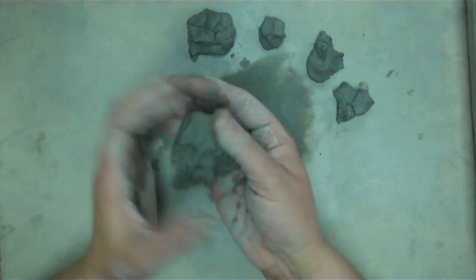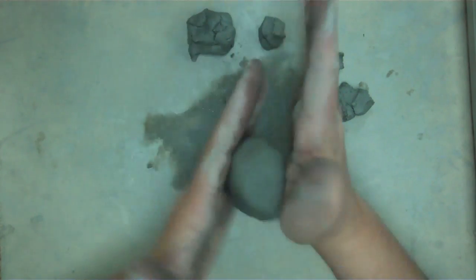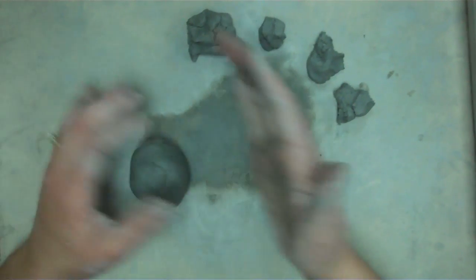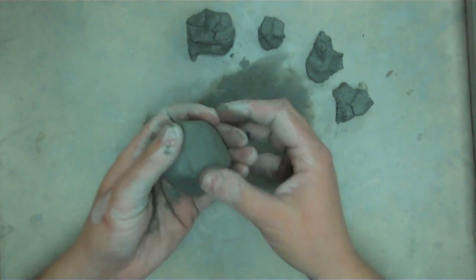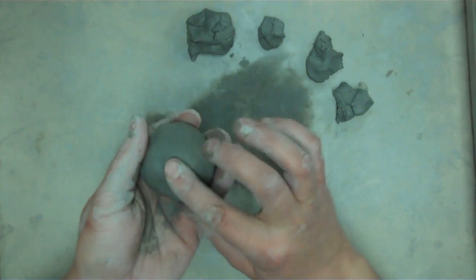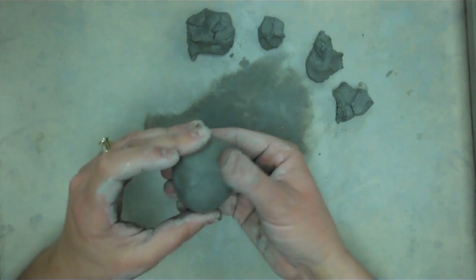Alright, so take your clay, roll it into a ball. You can roll it into a ball between your hands or on the clay mat. Another word for a ball shape is sphere. So you want to roll it into a sphere shape or a sphere form.